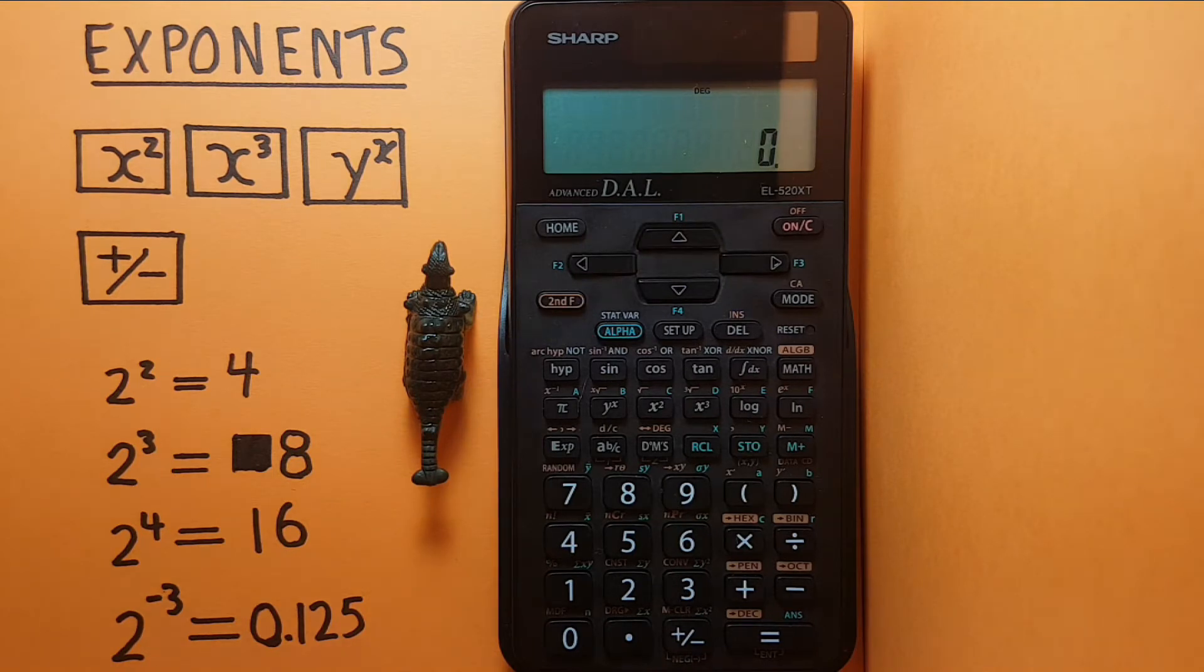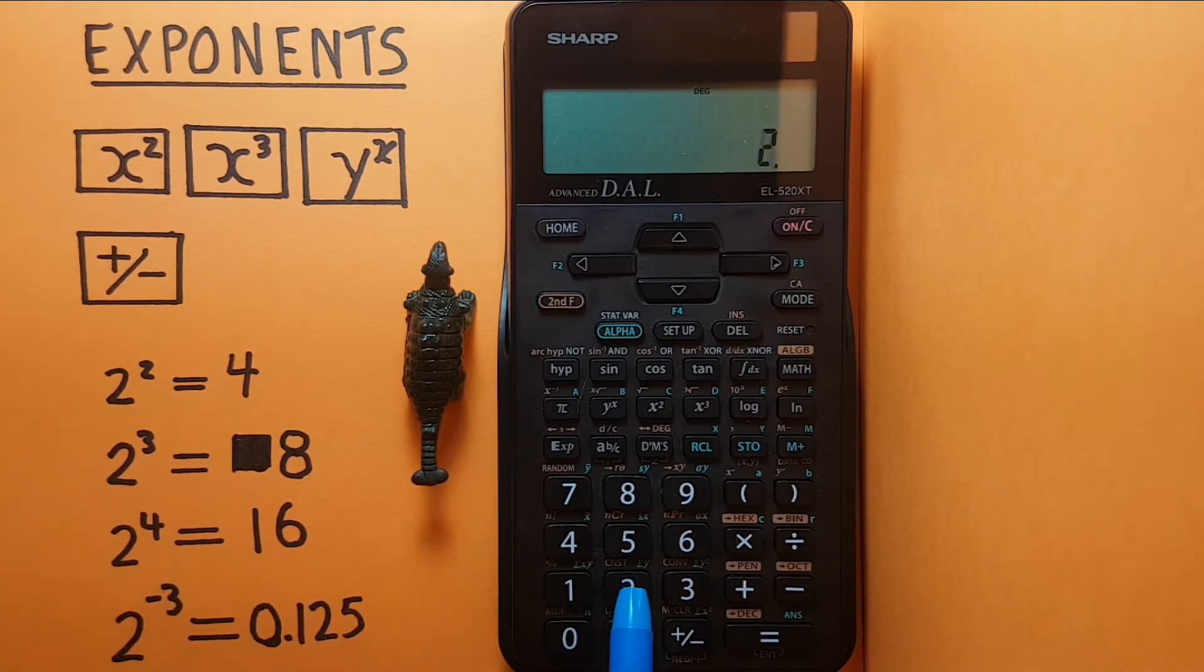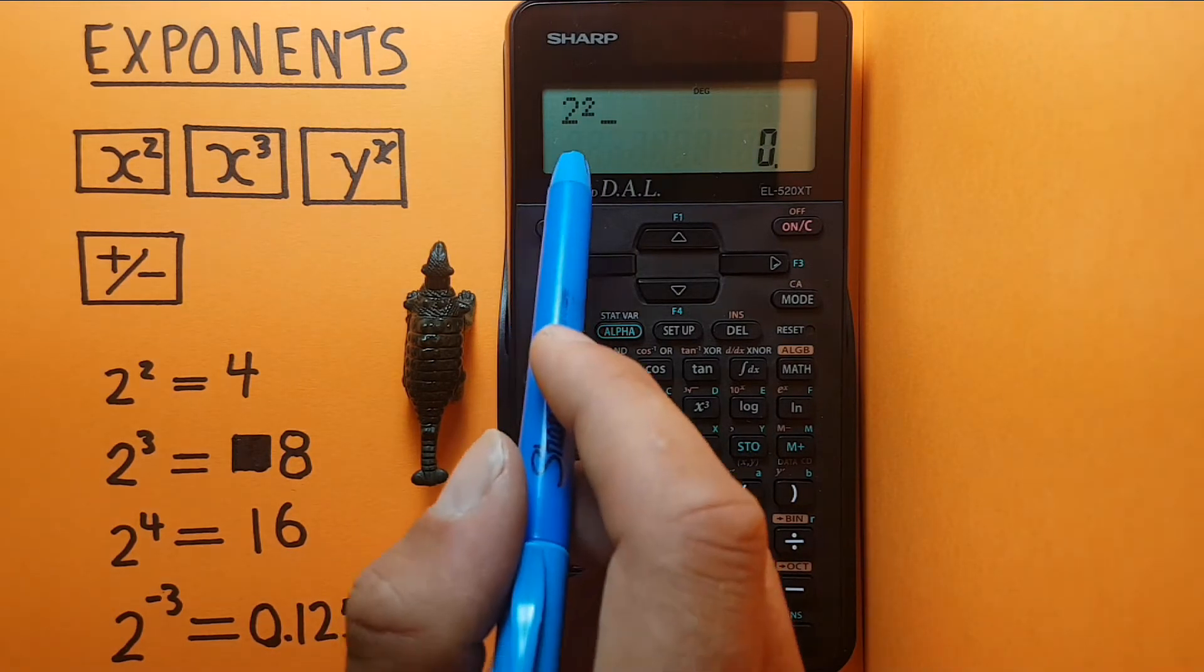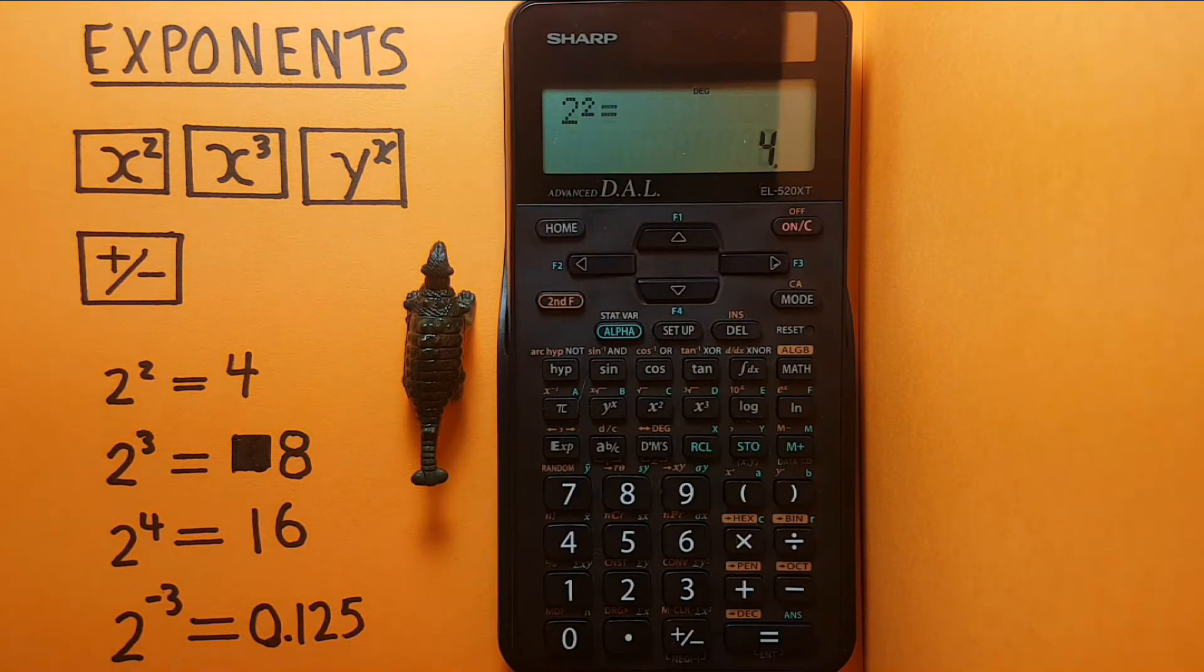Alright, we'll start off with the basics. If we want a square number, let's say 2 squared, we enter it as 2 x squared. See at the top of the screen we have 2 to the power of 2 equals, and this gives us 4, which is the correct answer as we know 2 times 2 equals 4.